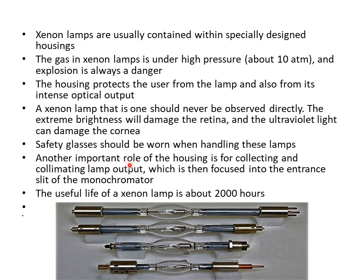Another important role of the housing is collecting and collimating the lamp output, which is then focused into the entrance slit of the monochromator. The operational life of xenon lamps is about 2000 hours.